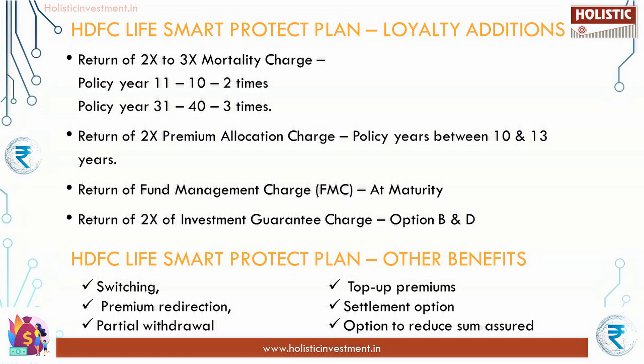Now let us look at loyalty additions. The product offers loyalty additions at different points during the policy term. Return of mortality charge: the product offers a return of two to three times the mortality charges starting from policy year 11. Return of premium allocation charge: two times the total premium allocation charge shall be added back in the form of extra units. Return of fund management charge: at maturity, the total fund management charges collected throughout the policy term will become payable. Return of investment guarantee charge: available only under Options B and D — at maturity, two times the total guaranteed charges collected throughout the policy term will become payable.